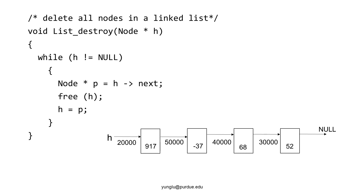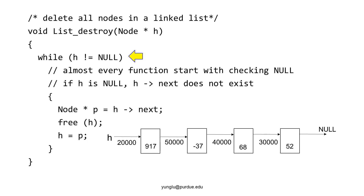Inside this function, it first checks whether h's value is null or not. As explained several times already, almost every function related to linked lists has to check whether it is null or not at the beginning of the function. If h is null, then h arrow next does not exist.